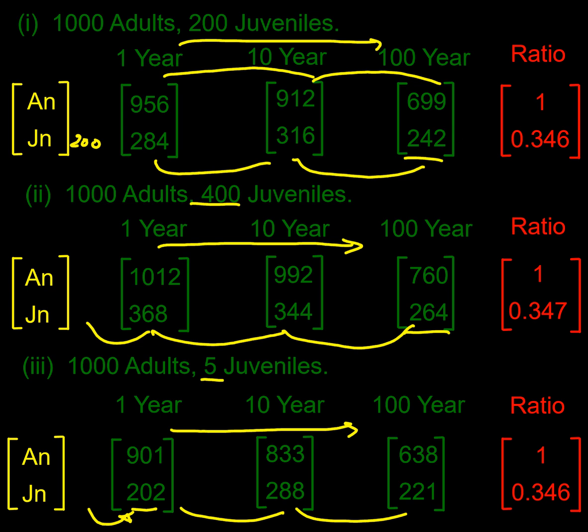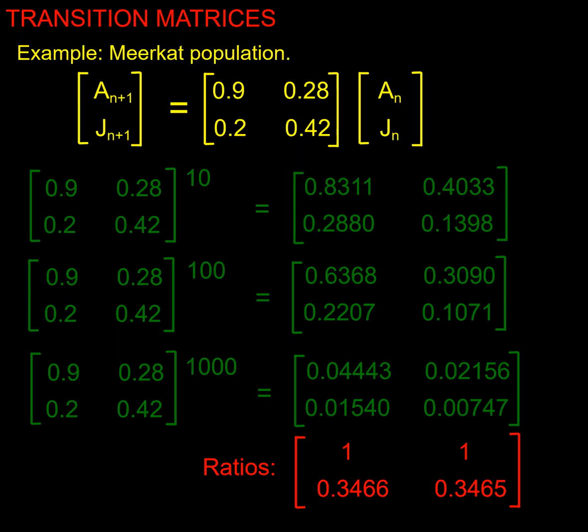In each of those it's interesting because this 240, 260, 220 are looking similar. If we look at it as a ratio of adults to juveniles, the juveniles divided by adults here is 0.346, in this setup it's 0.347, and in this setup it's 0.346. So it didn't matter how many juveniles we started with, we've ended up at a ratio of 0.346.